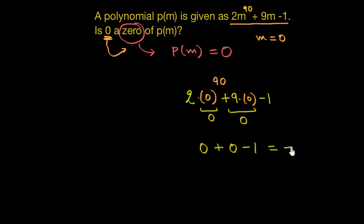So this value is negative 1 which is not equal to 0. On substituting 0 instead of m in this polynomial, the value is negative 1, not 0.